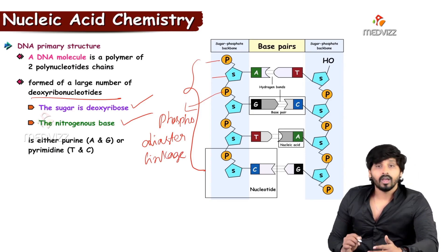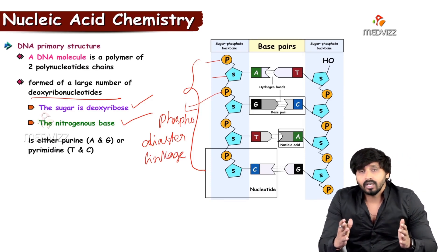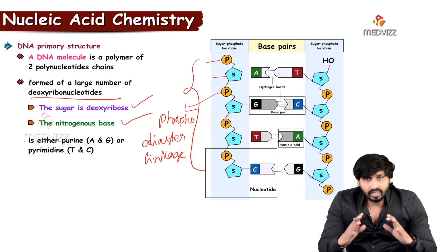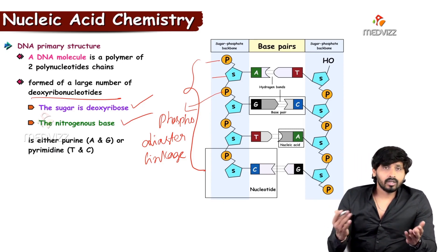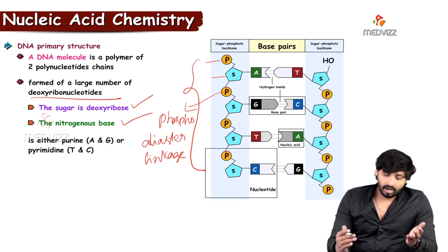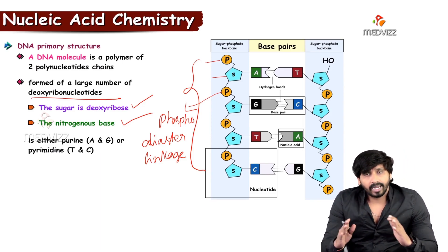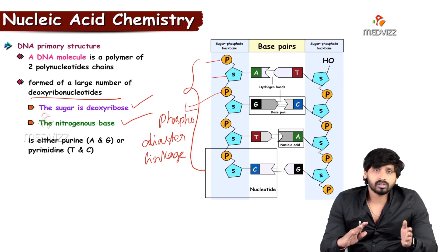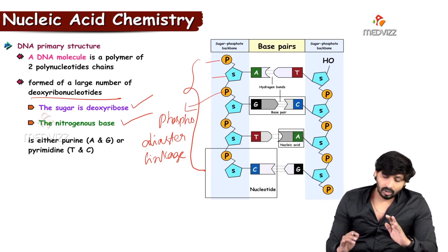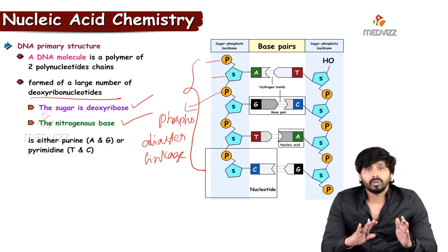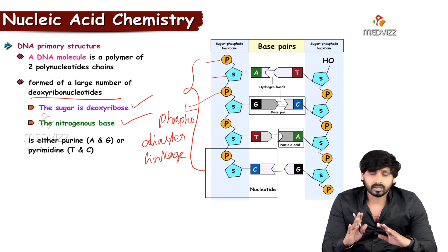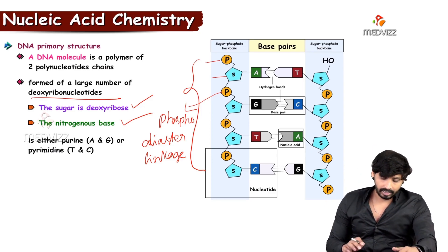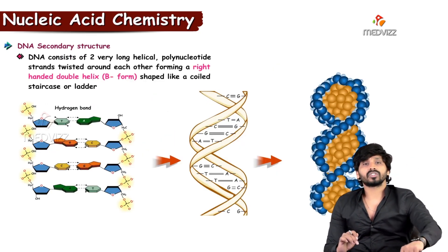The bases are present inside the two strands, on the interior of the double helix. Adenine links to thymine by hydrogen bonding, and cytosine combines with guanine by hydrogen bonding. The number of hydrogen bonds varies between the different base pairs.